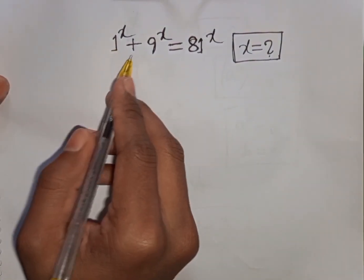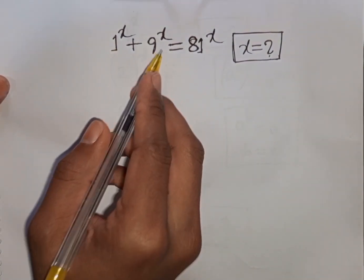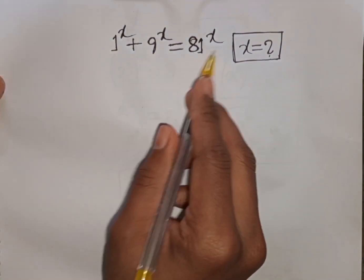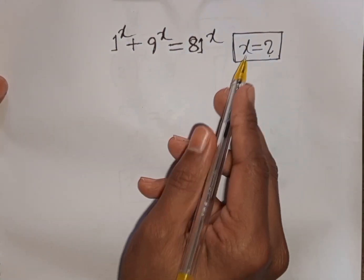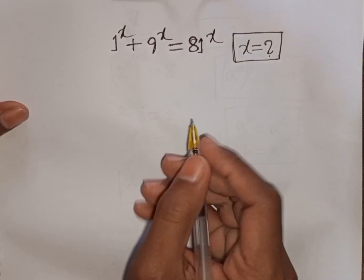1 power x plus 9 power x is equal to 81 power x. Find the value of x.